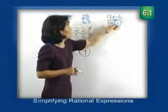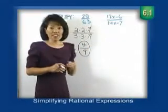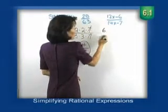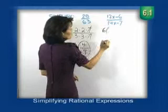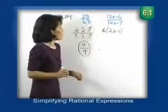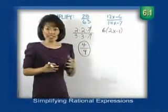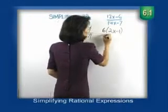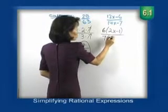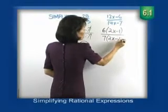Now there are two terms here. Right away, a GCF pops out, 12x and 6, GCF 6. Factored form, 2x minus 1. Let's look at our denominator. It's the same thing. 14x minus 7, GCF 7, inside the parentheses, 2x minus 1.